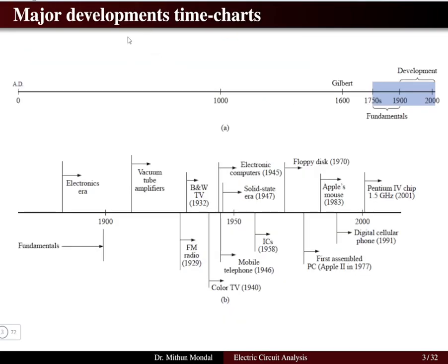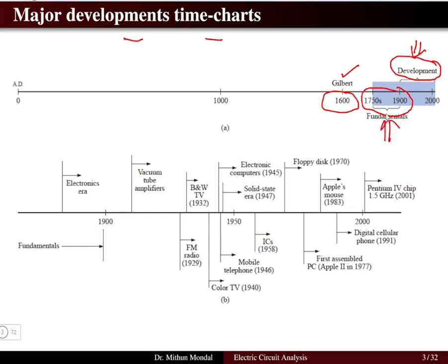If we look at the major development over a time chart, electrical engineering started mainly in 1600 AD with contributions from scientist Gilbert. The major fundamentals were developed during 1750 to 1900, and all major developments were completed between 1900 to 2000. Before 1900, the focus was on fundamentals and it was basically an electronic era.